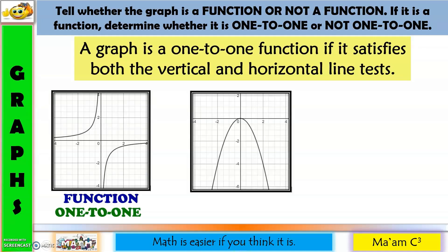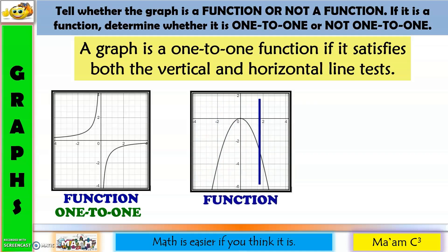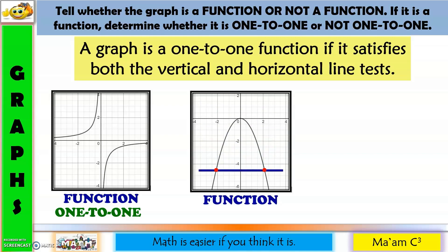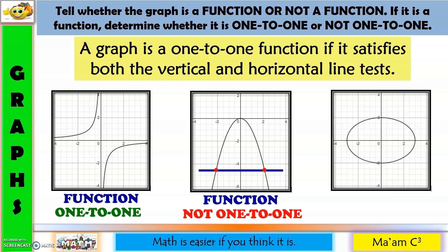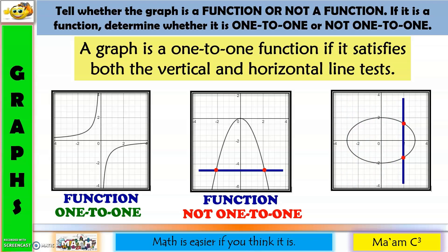Let us have another one. Vertical line test first. As the vertical line moves going to the right, it intersects the graph at exactly one point. Therefore, this is a function. Now, let's have the horizontal line test. As the horizontal line goes down, it intersects the graph at two points. Therefore, it fails the horizontal line test. So it means this graph is a function but not one-to-one. Another one — as the vertical line moves going to the right, it intersects the graph at two points. Therefore, this graph is not a function.